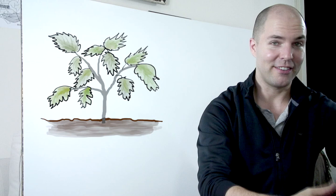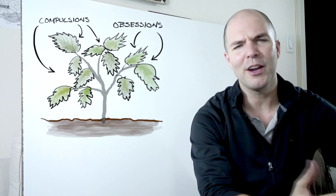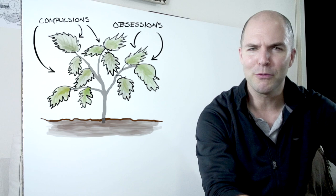So in this model, the leaves and the stems of the weed, those are the compulsions and the obsessions. So there's many of them. It's very rare that we only have one compulsion or one obsession. There's always lots of them and sometimes people refer to those as themes.